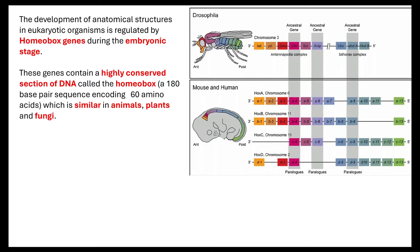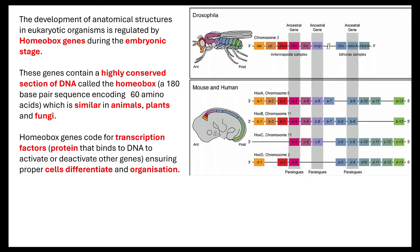There are a few mutations that can occur, but not much. What that therefore tells us is that these homeobox genes code for transcription factors — these are proteins that bind to DNA to activate or deactivate other genes. What they do is ensure that proper cell differentiation occurs and also that organisation.